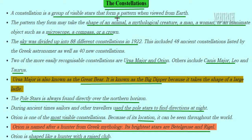Next is constellations. Constellations are a group of visible stars that form a pattern when viewed from the Earth. They form the shape of an animal, a mythological creature, a man, a woman, or any object such as a microscope, compass, or crown. If the stars are joined together, they look like an object.